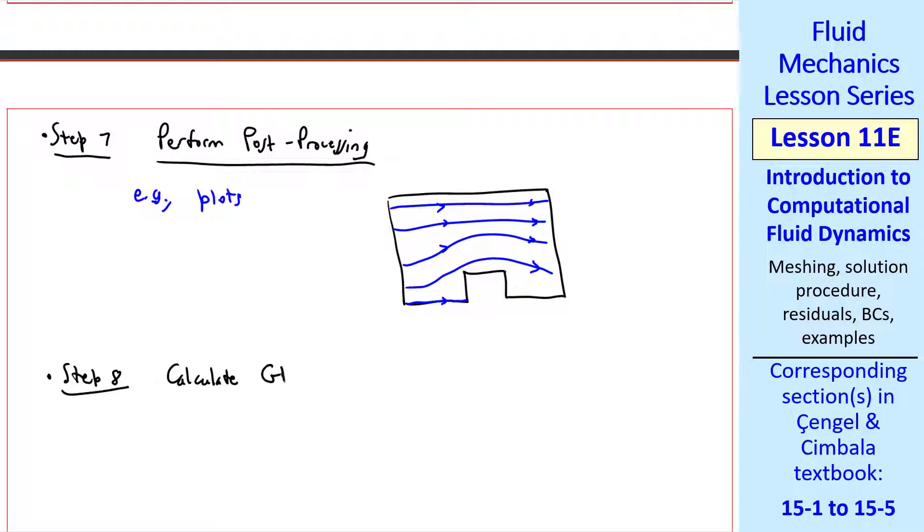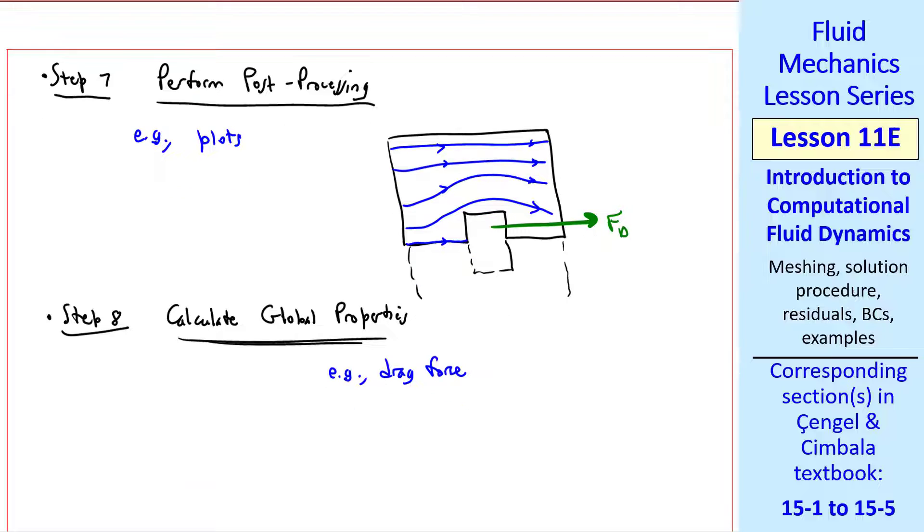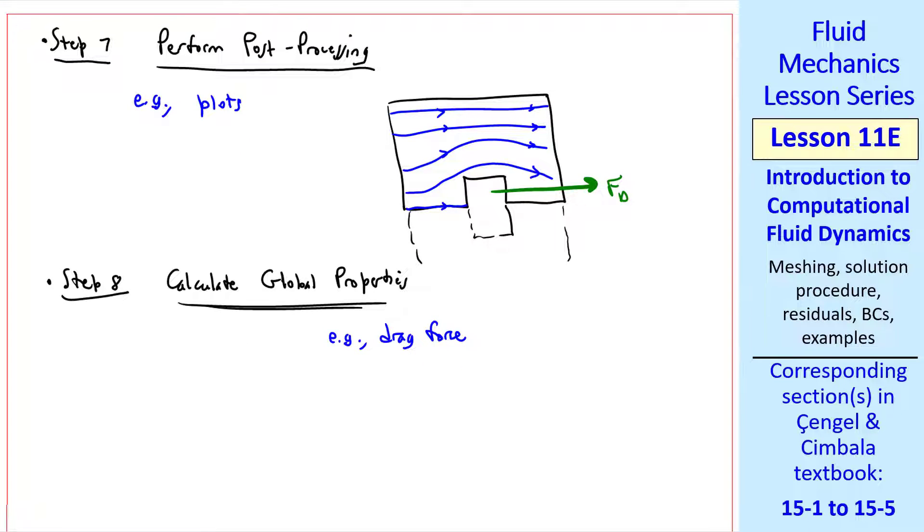Step eight is to calculate global properties. For example, drag force FD on the block. This would be done by integrating all the pressures and viscous forces on this part of the domain, which represents our block. If this were a symmetry plane at the bottom, you'd have to remember to multiply by two. The actual drag force on the block is twice what was calculated by the CFD. Although this has been a rather simplistic introduction, it shows you the basics of CFD and the procedure for how to solve fluid flow problems using CFD.